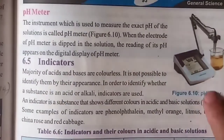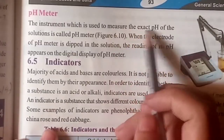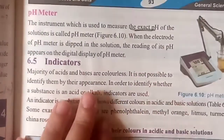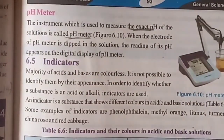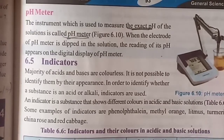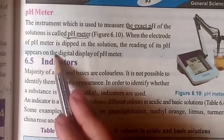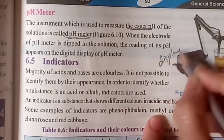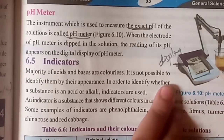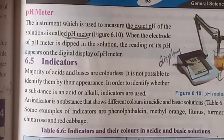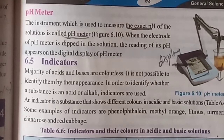The instrument used to measure the exact pH of a solution is called a pH meter. To find the exact pH value of any solution, we use this instrument. When the electrodes of the pH meter are dipped in a solution, the reading of its pH appears on the digital display of the pH meter — the value is shown on the screen.